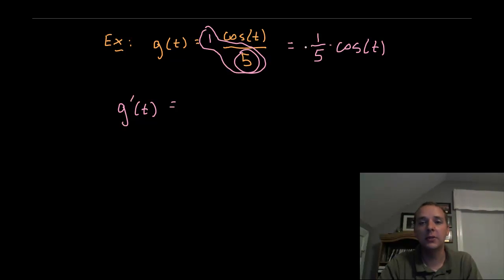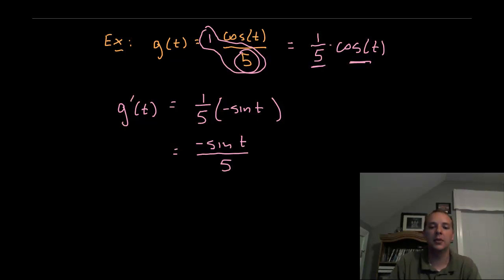Well that makes it much more clear because that's a constant multiple of cosine. So I'll hang on to the one fifth, I'll differentiate the cosine t and I'll get negative sine t. And you can either leave it like that or we can write negative sine t over five.